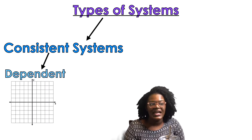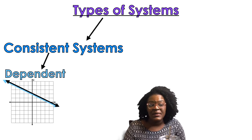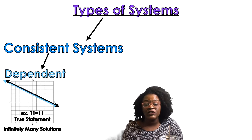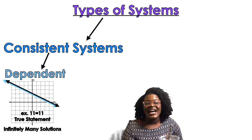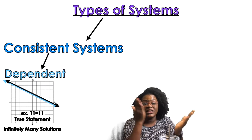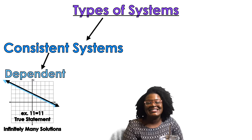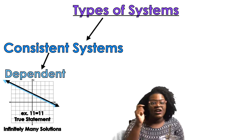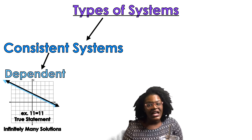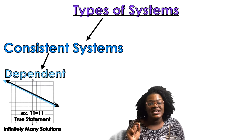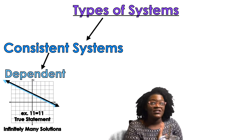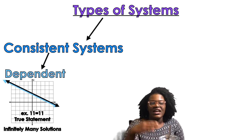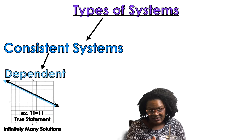The first is a dependent system. A dependent system is when the system has infinitely many solutions. If you're looking at a graph and the lines are the same — it looks like just one line because the lines are right on top of each other — that is a dependent system: consistent and dependent. If you're solving algebraically and you get a true statement like 11 equals 11 or negative 5 equals negative 5, that means it is a consistent dependent system.